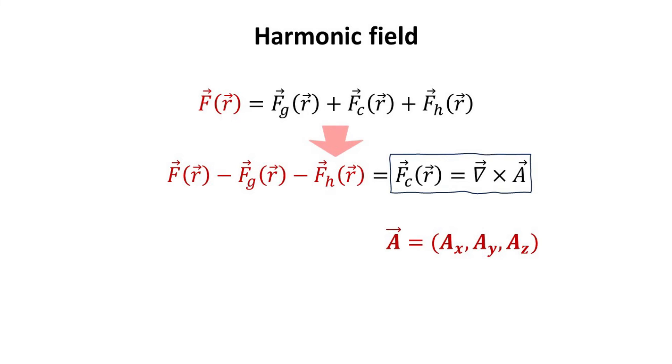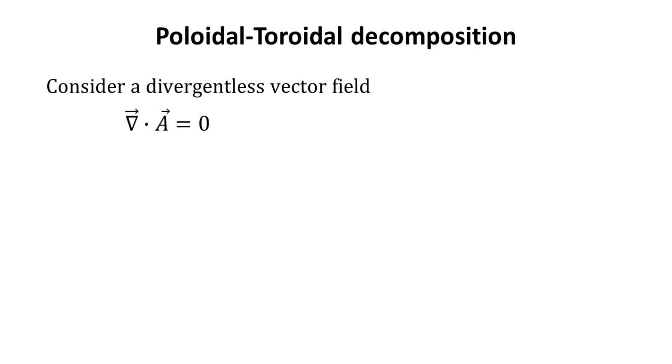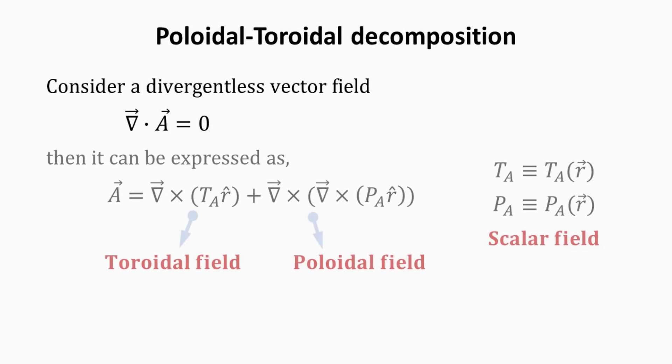One can think of the vector potential as three scalar fields, A_X, A_Y, and A_Z. But recall that we have imposed the Coulomb gauge for our vector potential, which then requires it to be divergentless.